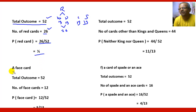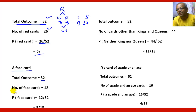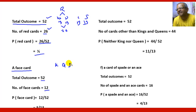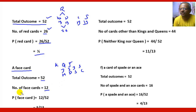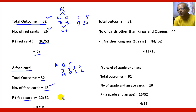The next question is: what are the chances of getting a face card? The total outcomes are 52. The number of face cards are 12, because there are three face cards in each suit — King, Queen, and Jack. So three of hearts, three of diamonds, three of spades, and three of clubs, making 12 in total. Therefore, the probability of getting a face card is 12 by 52, which equals 3 by 13.